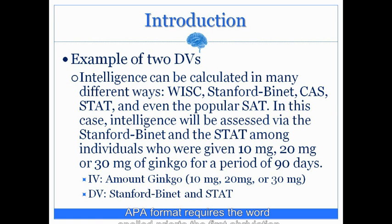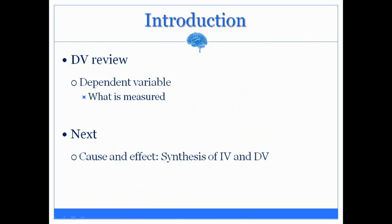To wrap up, the dependent variable is the object in an experiment that is measured by the researchers. To really bring the independent variable and the dependent variable together, that will be discussed in the next lecture, labeled cause and effect — the synthesis of the IV and DV. This will ensure that you really understand what an independent variable and a dependent variable each do for an experiment and how they allow you to determine cause and effect. So please tune into that. Thanks and have a great day.